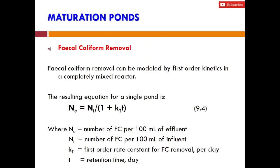Now we come to the design of maturation ponds. As discussed in Part 1, the primary function of maturation ponds is to remove fecal bacteria, or fecal coliforms. The fecal coliform can be modeled using this equation: Ne equals Ni over (1 + kT × t), where Ne is the number of fecal coliforms per 100 ml in the effluent, Ni is the number in the influent, kT is the first-order decay rate constant per day, and t is the retention time.